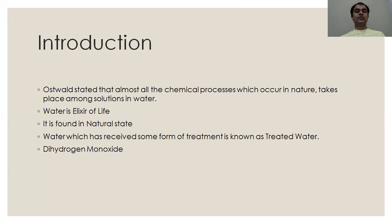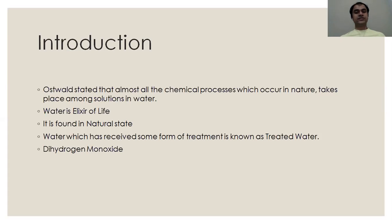As you know, more than 70% of our body has water. Water is found in a natural state. If water has received some form of treatment, then it is known as treated water. The chemical name of water is dihydrogen monoxide.